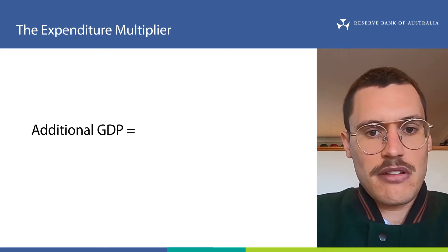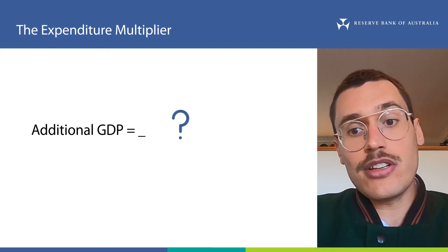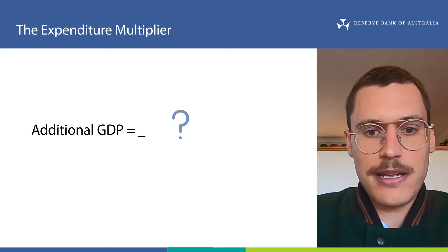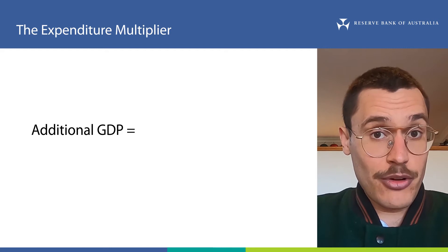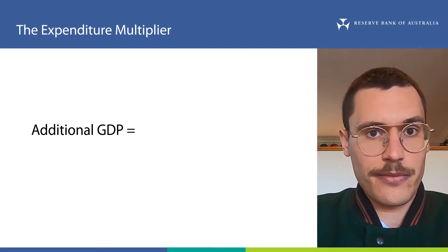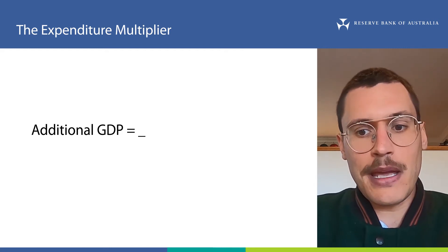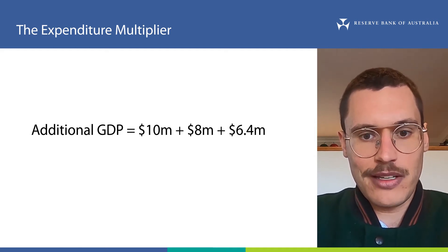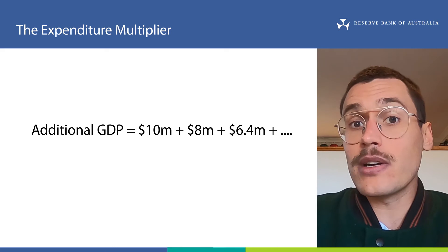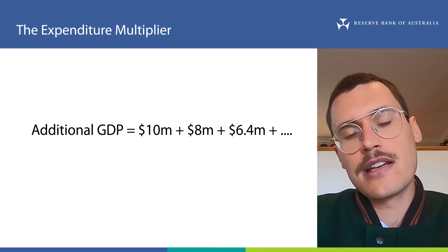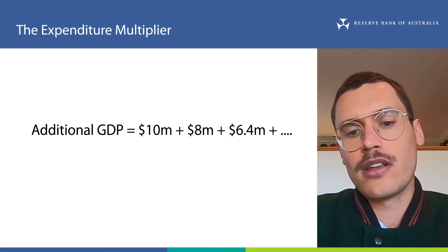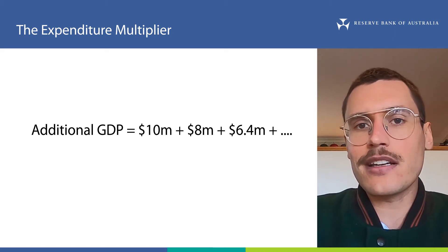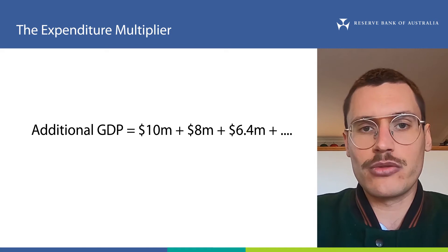So the next thing — how are we going to figure out how the original 10 million dollars that was spent is going to impact GDP? Well, we could keep repeating the process we just went through over and over. And when the extra money that was spent got close to zero, we could add up all the amounts that were spent through each cycle, and this would give us the total increase in GDP. But this would take a long time. So fortunately, there's another way. If we know the MPC, we can calculate what's called an expenditure multiplier.